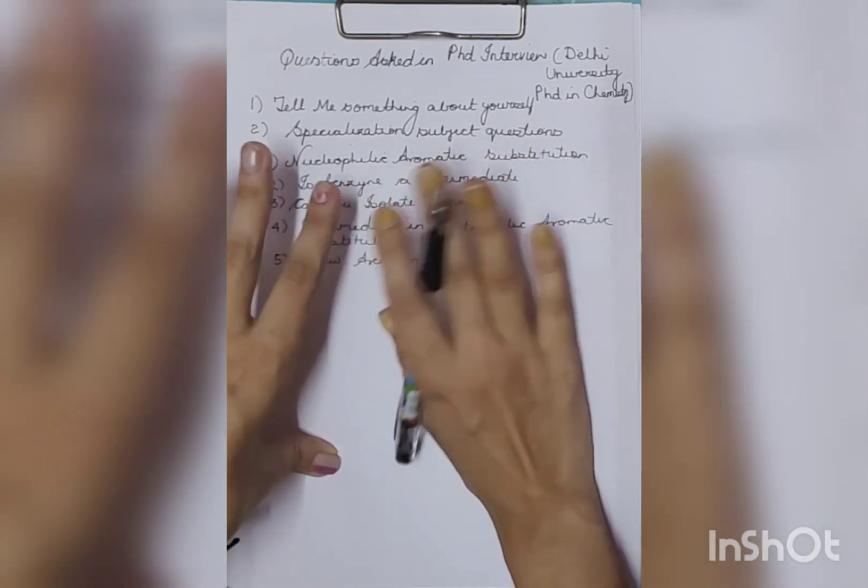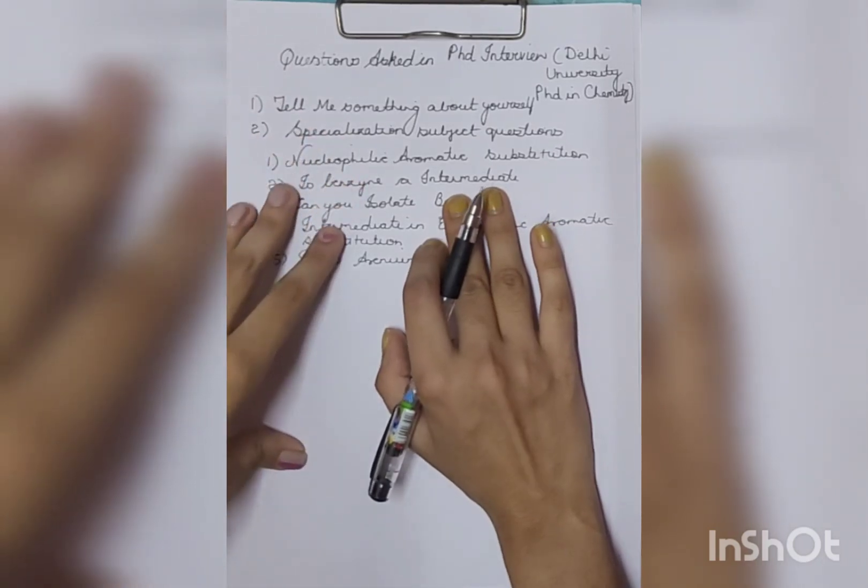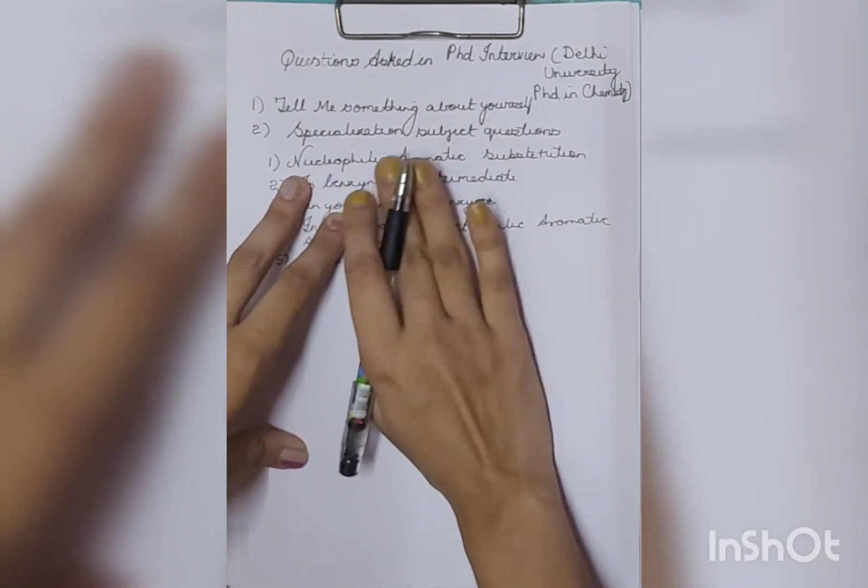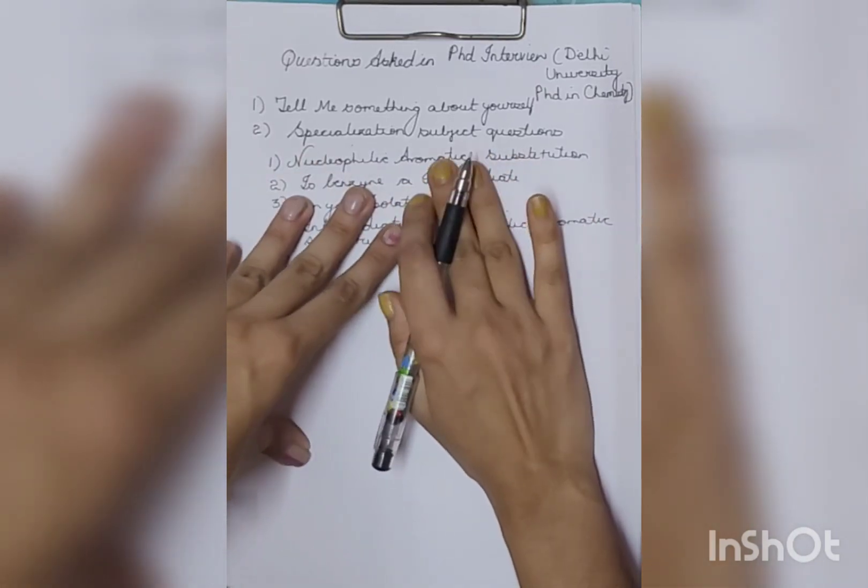Now after this, they will ask everything on specialization subject. If you have cleared the entrance or two to three months have passed and you haven't prepared actually, you can prepare for your specialized subject. You don't need to know about the physical - although in other interviews I was asked about thermodynamics formulas also, but still here they did not ask.